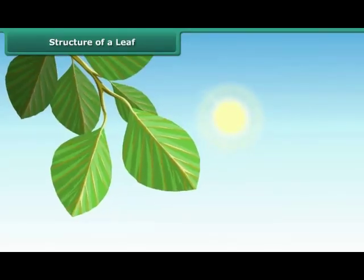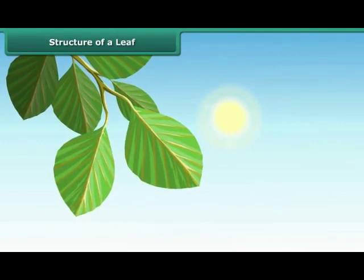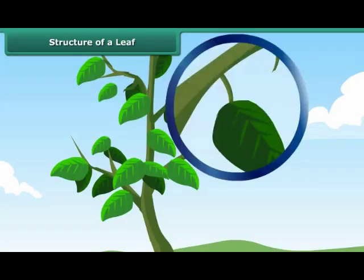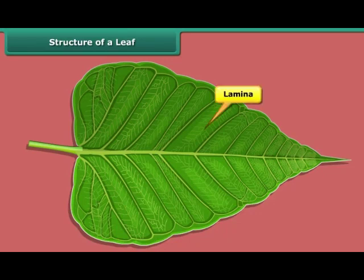A leaf is a flat green structure attached to a node on the stem. The stalk by which a leaf is attached to the stem is called the petiole. The thin, flat and wide part of the leaf is called lamina.